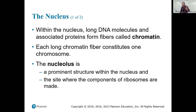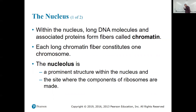Long DNA molecules and associated proteins — these proteins are called histone proteins — form fibers called chromatin. That's the stuff inside a nucleus. Each long chromatin fiber constitutes one chromosome. The number of chromosomes is species-specific — what's called the diploid number. Our number is 46; we have 46 chromosomes.